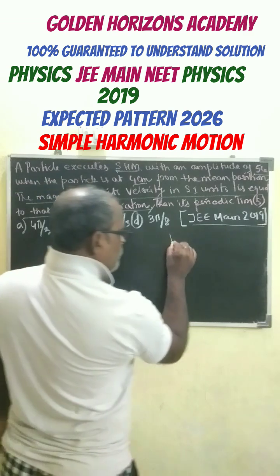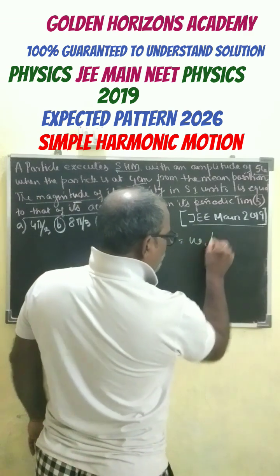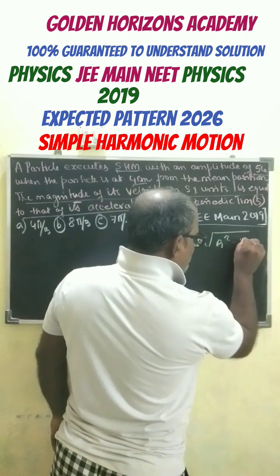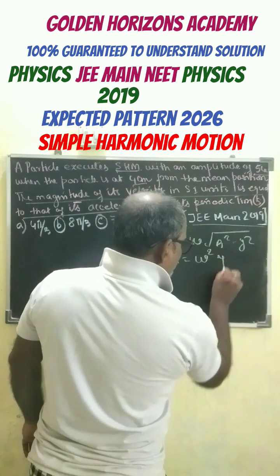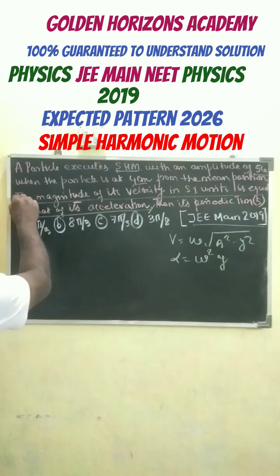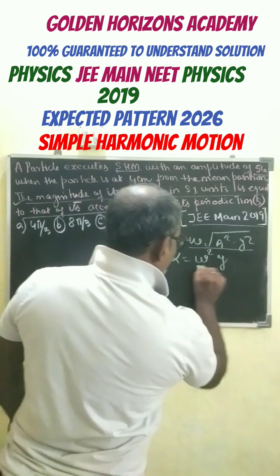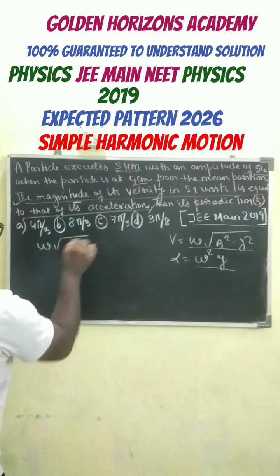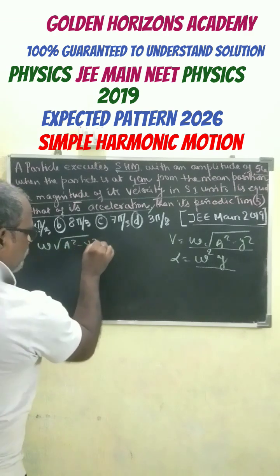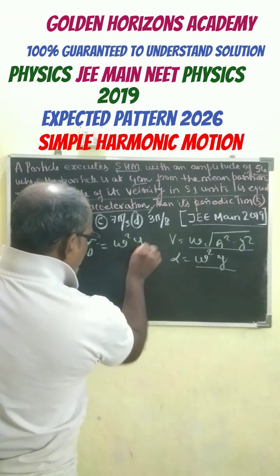So we know that the formula is V equals omega root over A square minus Y square, and also alpha equals omega square Y. Looking at this condition, this must be equals to this. So according to the question, we can write omega root over A square minus Y square equals omega square Y.